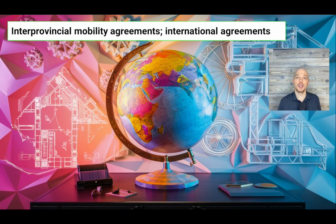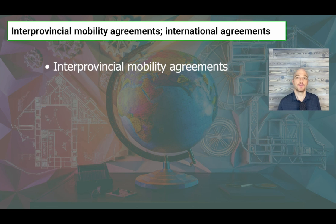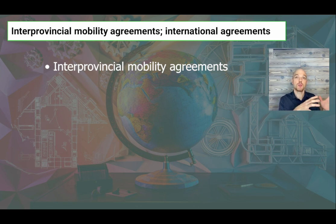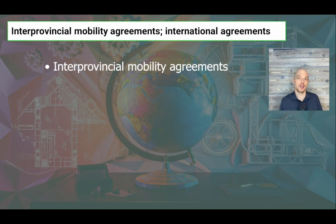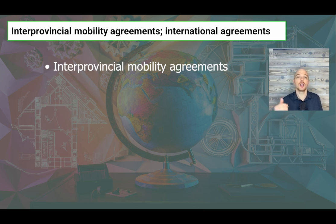Interprovincial mobility is outlined in the Canadian Free Trade Agreement and facilitates the movement of professionals across provincial or territorial borders in Canada. These agreements, negotiated between regulatory bodies and governments, allow professionals licensed in one province or territory to practice in another without significant additional requirements. The applicant will need to ensure they have no criminal convictions and are in good standing, meaning their dues are up to date and they are not under investigation. Interprovincial mobility helps professionals move their license to another province, hold multiple licenses in different provinces, or obtain a limited license when working for a short duration in another province.